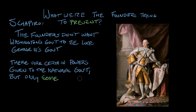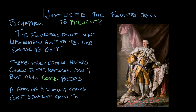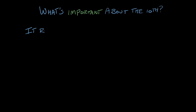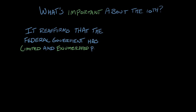That concern about a distant, strong government far from the people is really what underlies the principle of the Constitution, and that's what we see in the 10th Amendment — specifying that powers not delegated to the United States are reserved to the states. The 10th Amendment reaffirms that the basic structure of the Constitution is one of limited and enumerated powers. How limited is a matter of debate, but that they are limited, and all other powers are reserved to the states respectively or to the people, is now a matter of constitutional law and constitutional text.